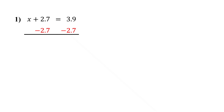Now on the left, 2.7 minus 2.7 is 0 — they cancel out, leaving just x. On the right, 3.9 minus 2.7 is 1.2. So the solution is x equals 1.2.